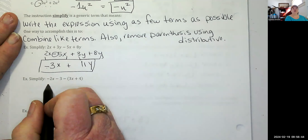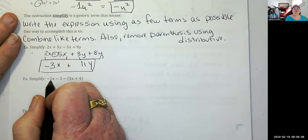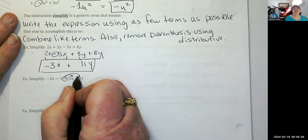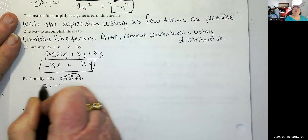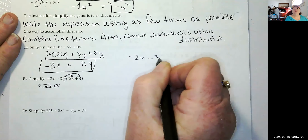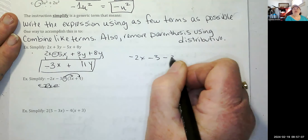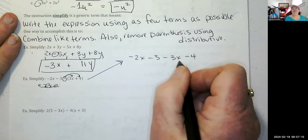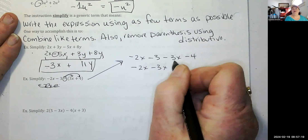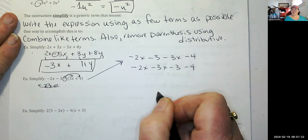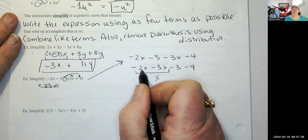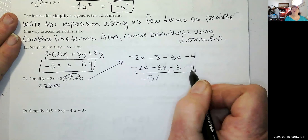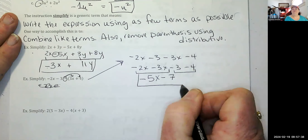Simplify: negative 2x minus 3 minus the quantity 3x plus 4. The second part has to be distributed. Distributing: negative times positive 3x is negative 3x, negative times positive 4 is negative 4. Combining like terms: negative 2x minus 3x — signs same, add — negative 5x. Negative 3 minus 4 — signs same — negative 7. Answer: negative 5x minus 7.